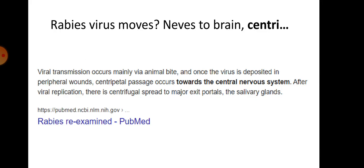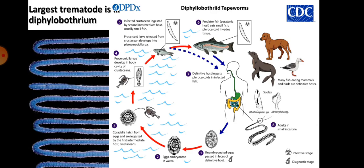Rabies virus moves first centripetally, then centrifugally. Transmission occurs mainly via animal bite; once the virus is deposited in peripheral wounds, the centripetal passage occurs towards the central nervous system. After viral replication, there is centrifugal spread to major exit portals such as the salivary glands.